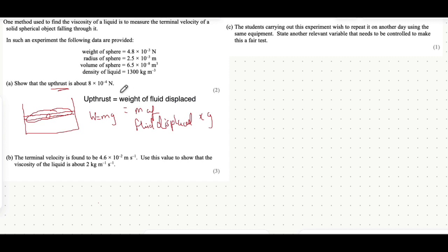It's told you the density of the liquid and the volume of the sphere. We also know that density equals mass over volume. This is given in your equation sheet. Multiplying both sides by volume, we get mass equals density times volume.